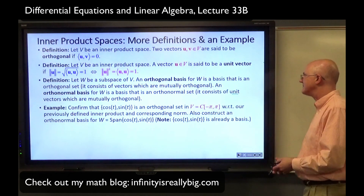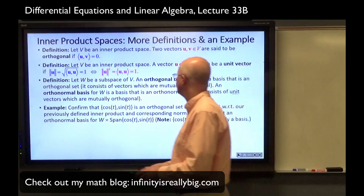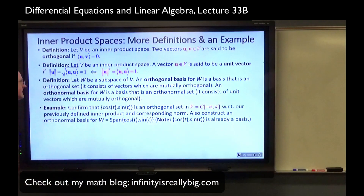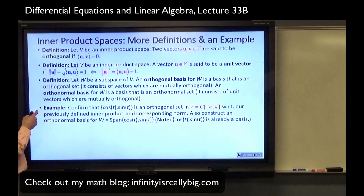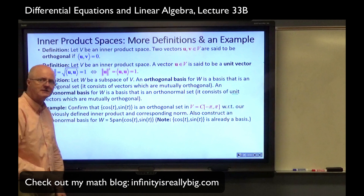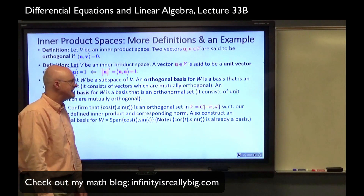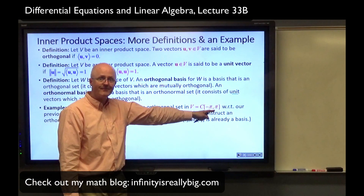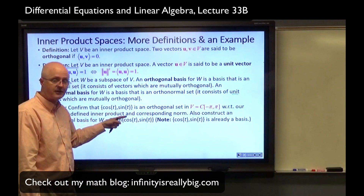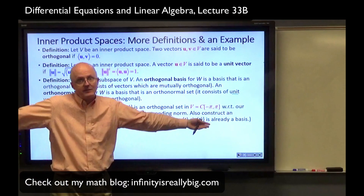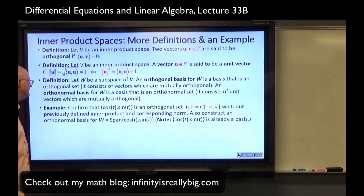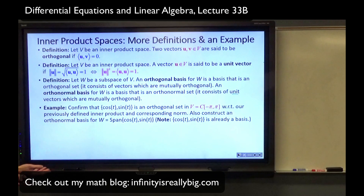Here's our main example in this part of lecture 33b. Confirm that this set of two functions — which are vectors in this vector space — are continuous on the entire interval from negative pi to pi. With respect to the previously defined inner product involving the integral, and the corresponding norm and distance, we want to confirm this as an orthogonal set. Note that does not mean the graphs of cosine and sine intersect at right angles — they don't.